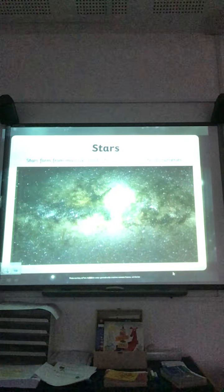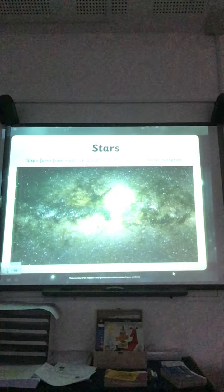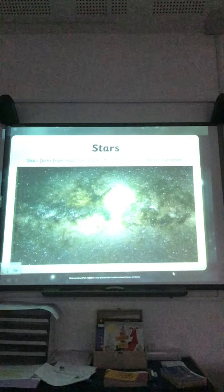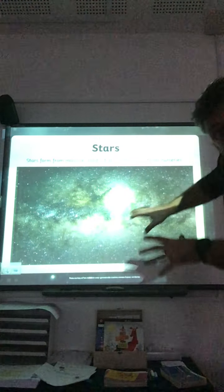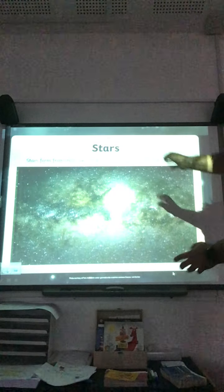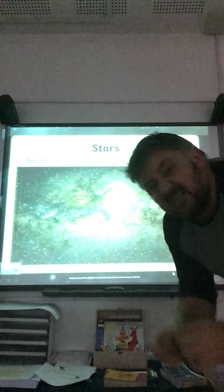Stars form — that means they are kind of made — from massive clouds of dust and gas in what we call stellar nurseries. So imagine this: everyone breathe in. You're breathing in gases — oxygen, nitrogen, a bit of carbon dioxide, other innocuous gases. Well in space there's loads of these gases just floating around everywhere. And in amongst the gas there's bits of dust — particles of dust, probably from bits of asteroids, bits of rock, bits of planet — floating around.